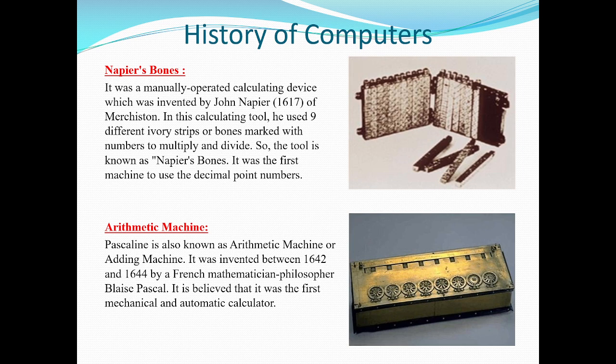The third device in the history of computers is the arithmetic machine, also called the adding machine. It was invented by Blaise Pascal between 1642 and 1644. He was a French mathematician and philosopher, and it is believed to be the first mechanical automatic calculator. Unlike Napier's Bones, which was manually operated, the Pascaline is an automatic mechanical calculator.